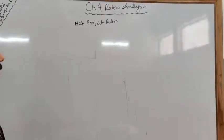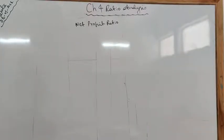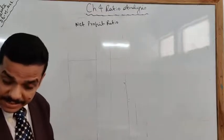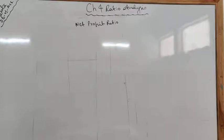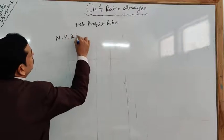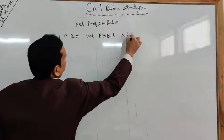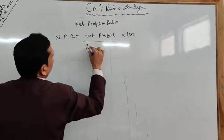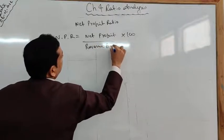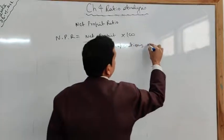We continue with Chapter 4, Ratio Analysis. Today's ratio is the Net Profit Ratio. This ratio establishes the relationship between net profit and revenue from operations. Revenue from operations is the updated term per the 2013 amendment — previously it was called net sales. It shows the percentage of net profit earned on revenue from operations. The formula is: Net Profit Ratio = Net Profit × 100 / Revenue from Operations (or Net Sales).